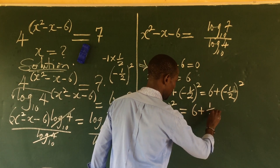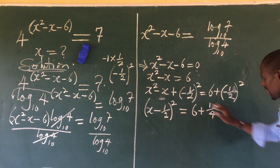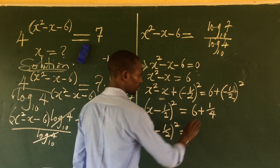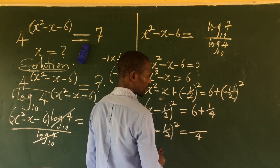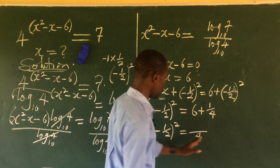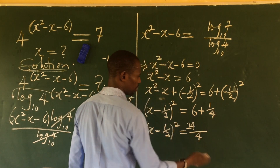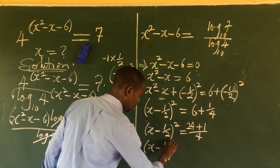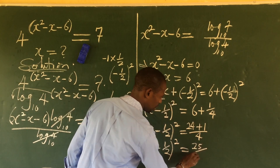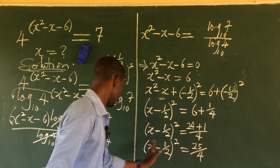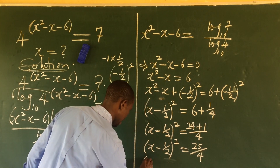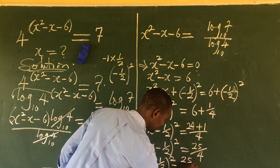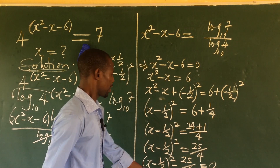Handling the right side, the LCM is 4: 4 × 6 = 24, and 1/4 gives us 1, so 24 + 1 = 25. Therefore (x − 1/2)² = 25/4. We can rearrange this as (x − 1/2)² − 25/4 = 0, which is what we substitute back into the main equation.